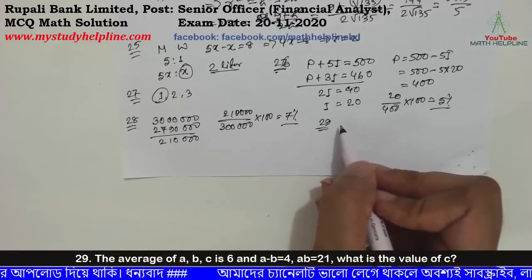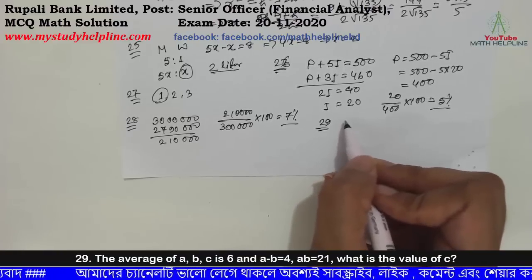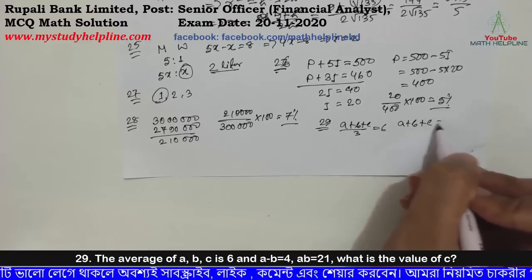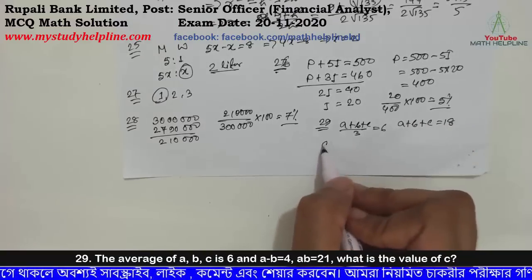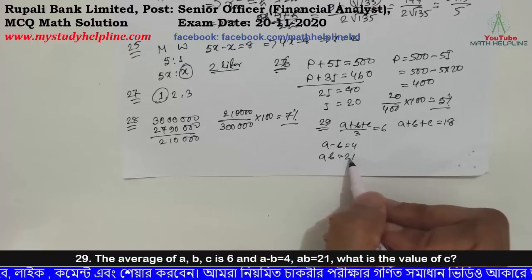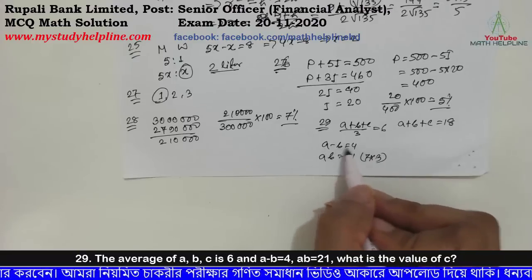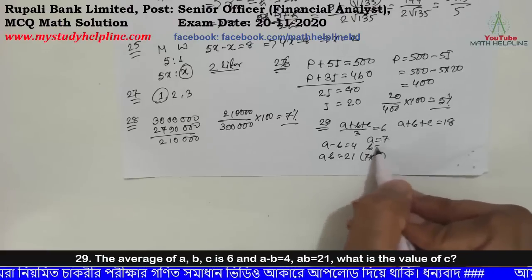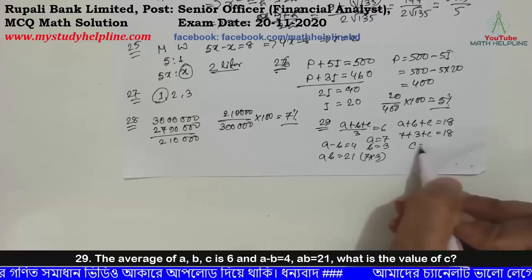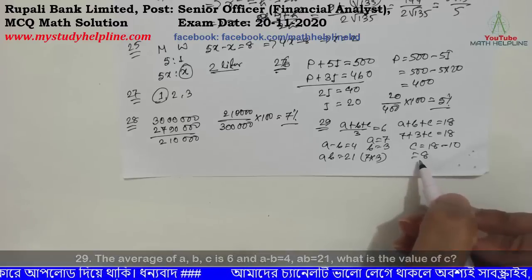The average of A, B, C is 6. A plus B is equal to 4. A times B is equal to 21. What is the value of C? The average of A, B, C equals 18, so A plus B plus C equals 18 times 3. A plus B equals 21. Solving: A equals 7, B equals 3, so 7 plus 3 plus C equals 18. Therefore C equals 18 minus 10 equals 8. So C is 8 percent.